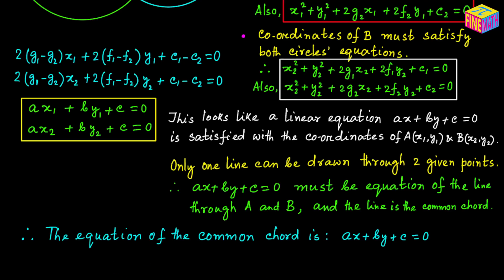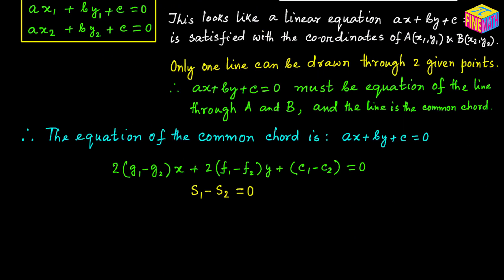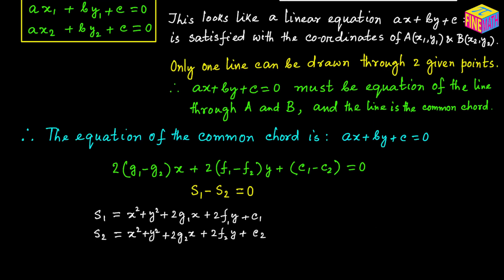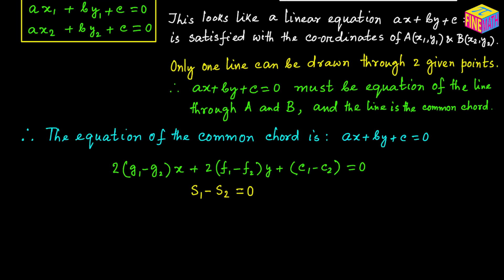Now if we replace the values of a, b, and c, the equation is going to look like this: 2 times (g sub 1 minus g sub 2) times x plus 2 times (f sub 1 minus f sub 2) times y plus (c sub 1 minus c sub 2) equals 0 — and that is the equation of the common chord. If you carefully look at it, you will realize that this is actually s sub 1 minus s sub 2. Because when we subtract s sub 2 from s sub 1, the x squared and y squared terms cancel, and we are left with exactly that expression. So the equation of the common chord is simply s sub 1 minus s sub 2 equals 0. It is very easy — you just subtract the two circle equations and the result is the equation of the common chord.